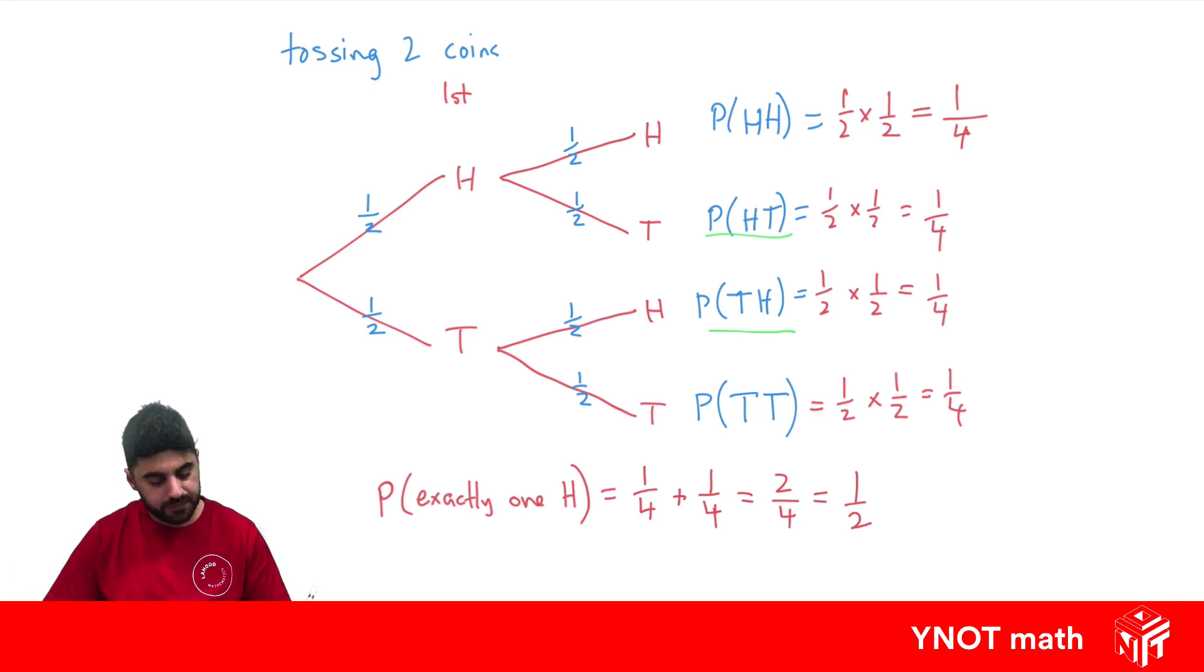So to sum up, whenever you move across the tree diagram this way, you need to multiply your probabilities together. And whenever you're looking at more than one event here with compound events, we need to add them this way.